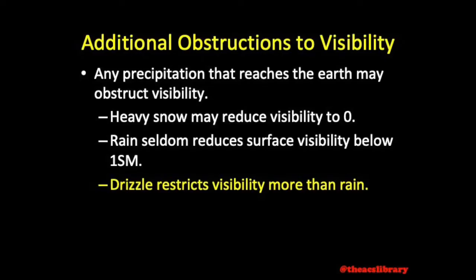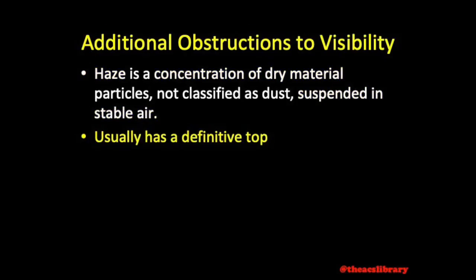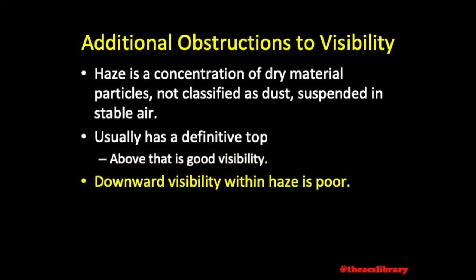There are fewer droplets per unit area with larger drops. Haze is a concentration of salt or other dry material particles — not classified as dust or other phenomena — suspended in stable air. Haze usually has a definitive top; above that is good visibility. Downward visibility within haze is poor, especially on a slant, which affects pilots on approach to landing.